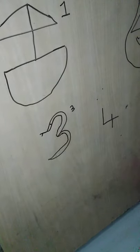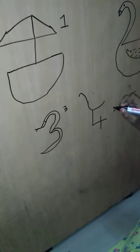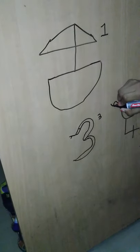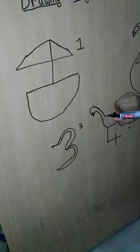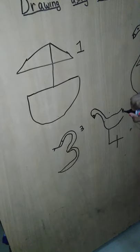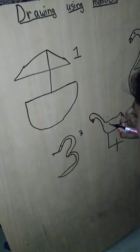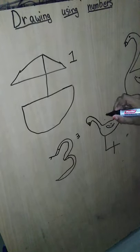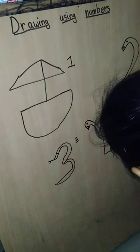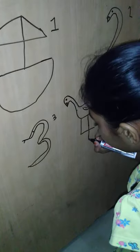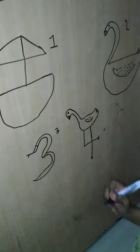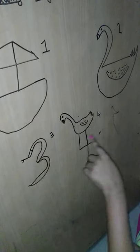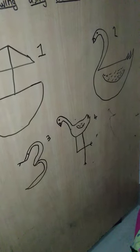Now by using the number four, draw the four and underneath draw a line like this. Then draw something like we drew for number two — a line, then a C shape, and inside it draw a dot. Join this line to the bird's body, make it a bit longer, and draw a V underneath. We drew a flamingo using the number four!